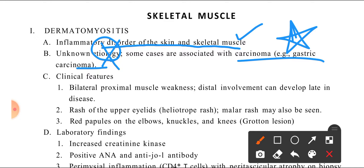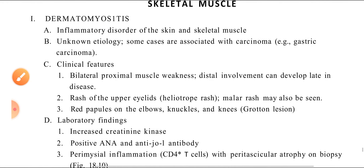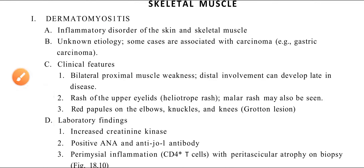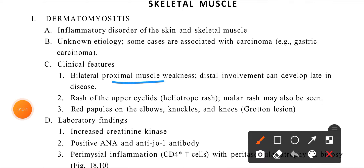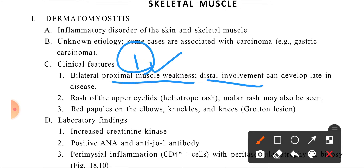Clinical features: if it is dermatomyositis, the proximal muscles show bilateral weakness when inflammation occurs. Distal involvement can develop later in the disease. And since skin is involved in inflammation, we also have to look at the skin.